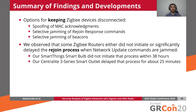Interestingly, we observed that some Zigbee routers did not initiate at all or significantly delayed the rejoin process when they failed to receive the network update command. In particular, our smart bulb did not initiate the rejoin process at all during the 38 hours that we monitored, while our Centralite 3-series smart outlet initiated that process after about 25 minutes following our selective jamming of the network update command.